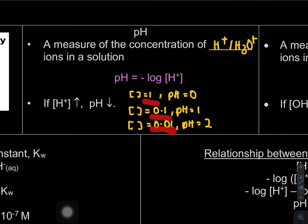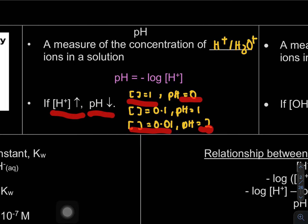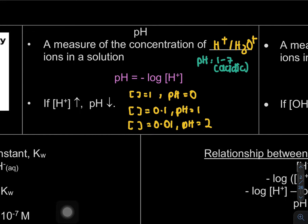As you can see, when concentration decreases from 1 to 0.1 to 0.01, pH increases. So if H⁺ concentration is high, pH is low, and if concentration is lowest, pH is the highest. That is why pH 1 to 7 is considered acidic, and pH 8 to 14 is considered basic, because the concentration of H⁺ becomes very very small.